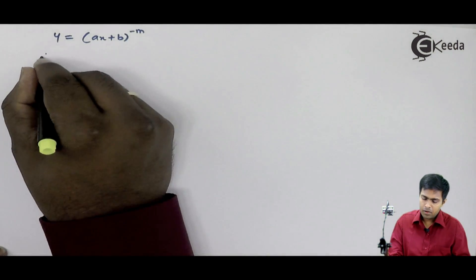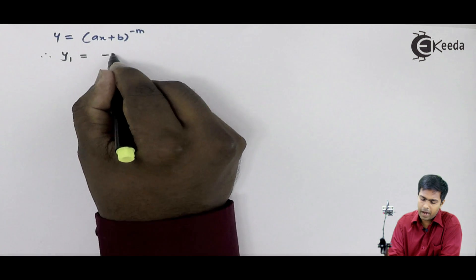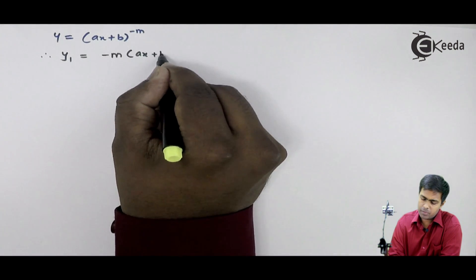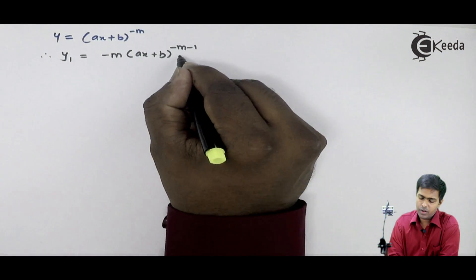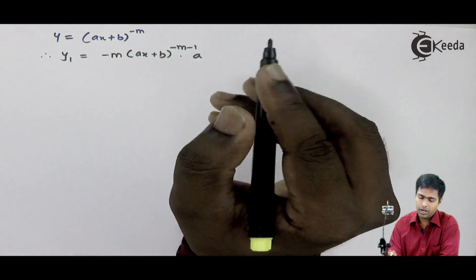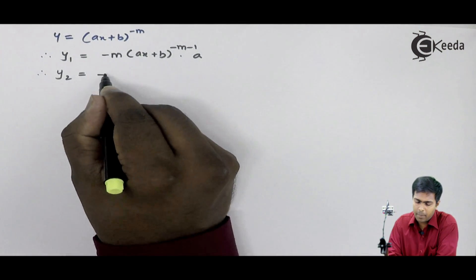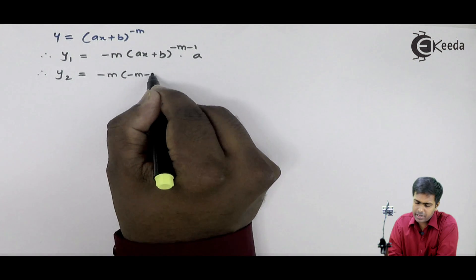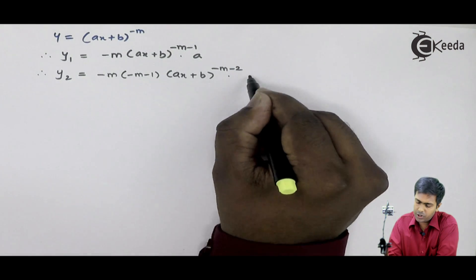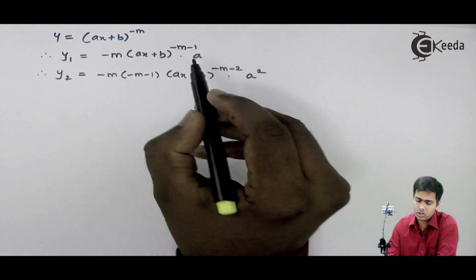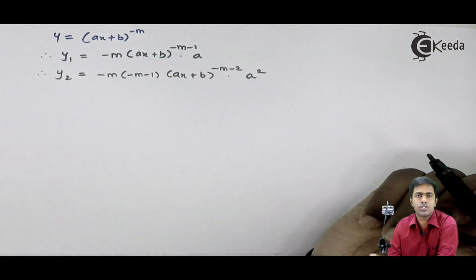y1 is nothing but minus m times (ax + b) raised to minus m minus 1, by using the chain rule formula, multiplied by a. Now, finding y2 from y1, it is nothing but minus m times minus m minus 1 times (ax + b) raised to minus m minus 2, times a squared. Because we already had one a in y1 and one more a from differentiating again, so it becomes a squared.